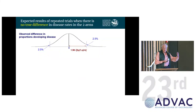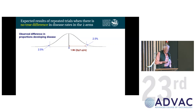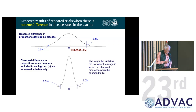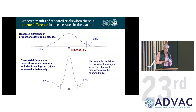If we do many trials where the true efficacy is zero, we get different results each time. The distribution of differences will be centered at zero, with about 95% falling within about two standard errors. To narrow that confidence interval, we can't generally change P — the probability of developing disease — but we can increase N, the number in each arm, which shrinks the distribution.